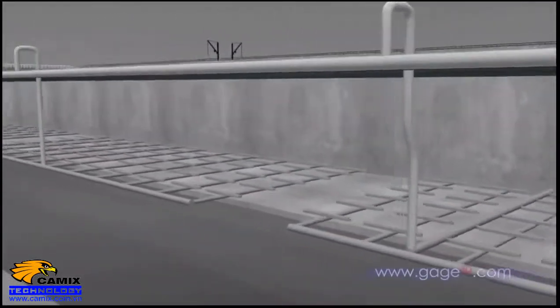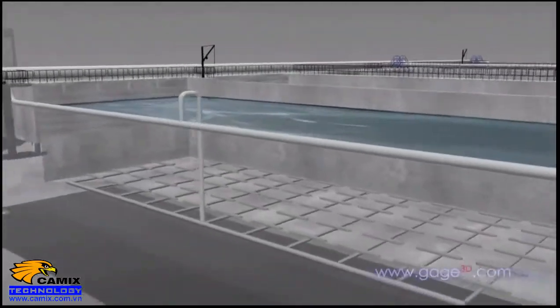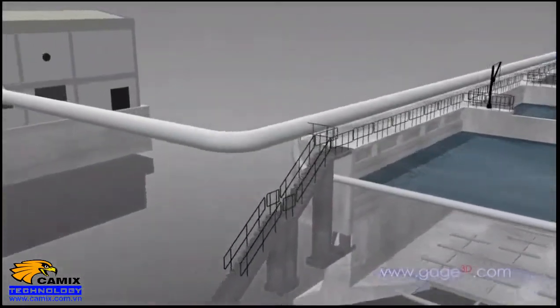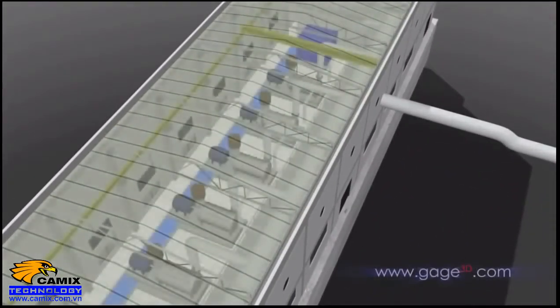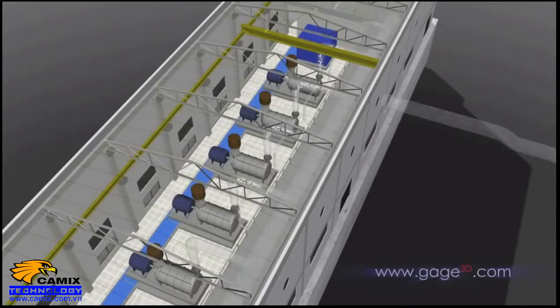The first secondary treatment stop is the aeration basin. Unlike primary treatment, this part of the treatment process relies on biological action rather than physical separation. Blowers generate oxygen that is distributed through a network of pipes into the aeration basin.